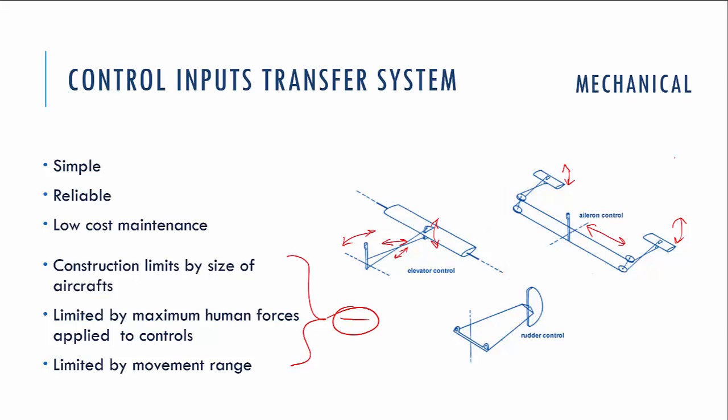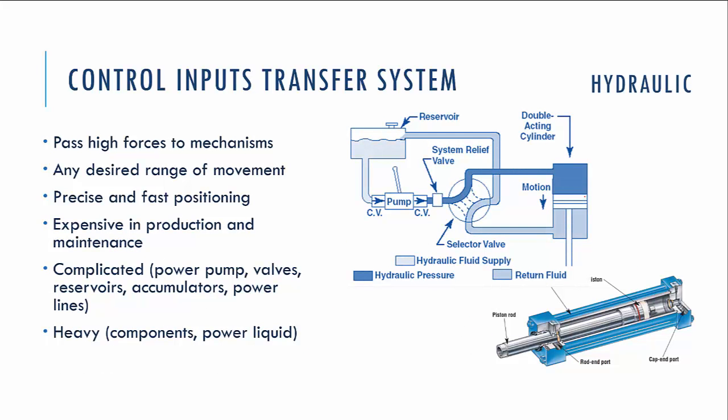For example, on a Cessna 152, the movement range of the yoke is about 40 or 45 centimeters from maximum forward to maximum aft position. If we make this range bigger it would be inconvenient and takes a lot of space in the cabin. One more minus is that the mechanical system takes up space in the fuselage, requiring special routing for rods and cables, occupying space that could be used for other things.